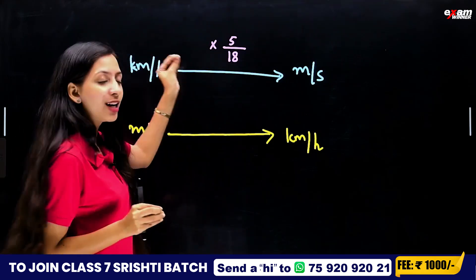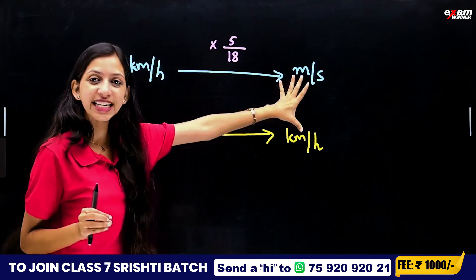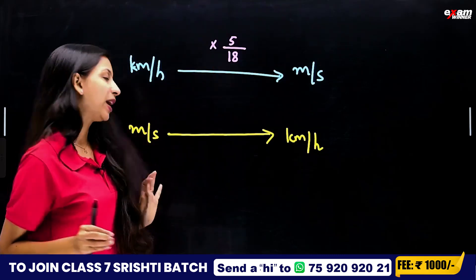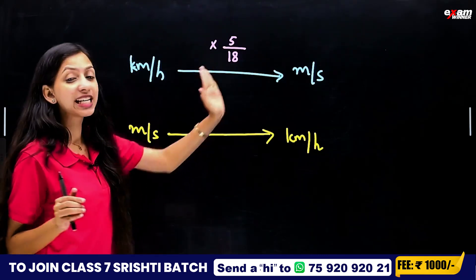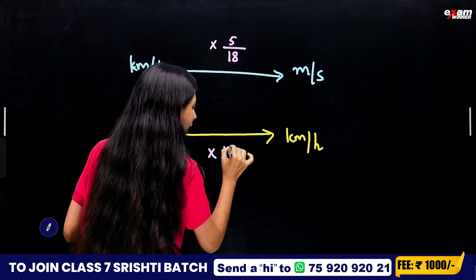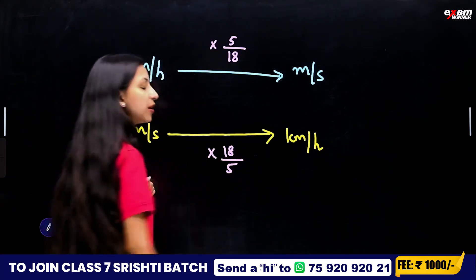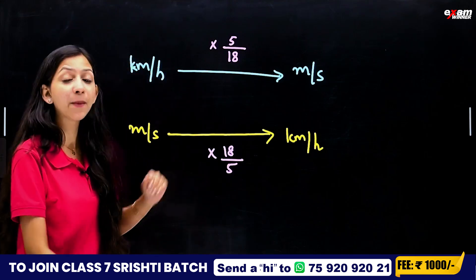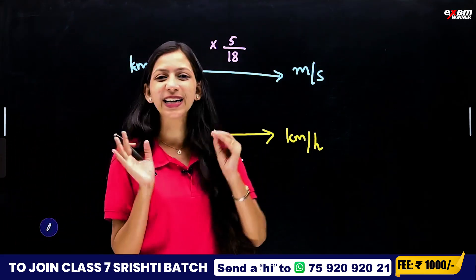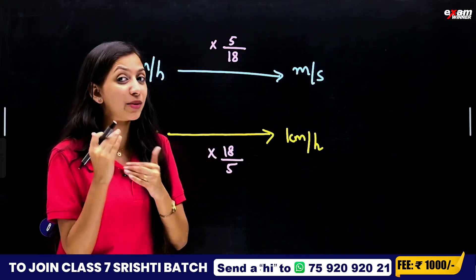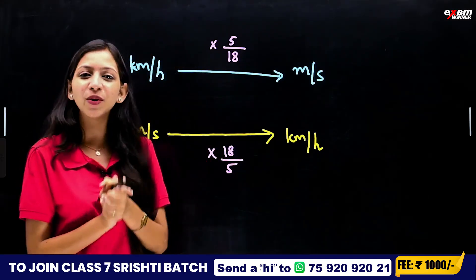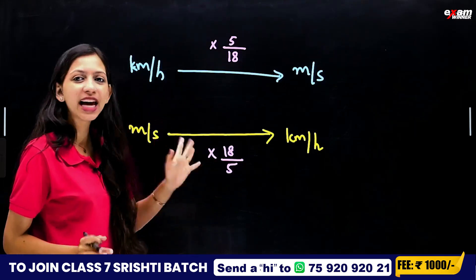To convert km per hour to m per second, we multiply by 5 by 18. If you see m per second and want to convert back, we multiply by 18 by 5. We will go through this in detail in this video. This is our basic idea.